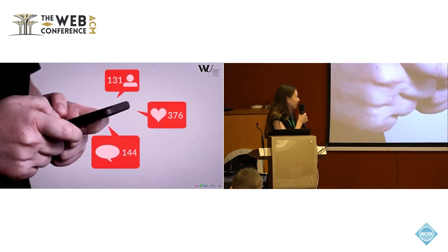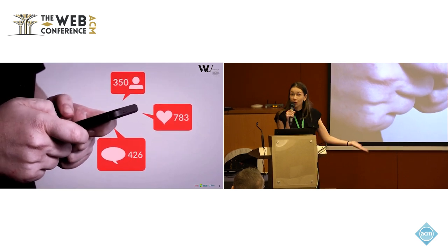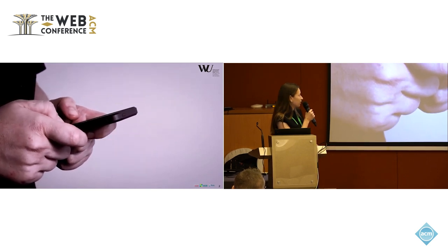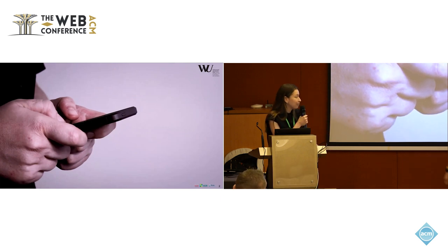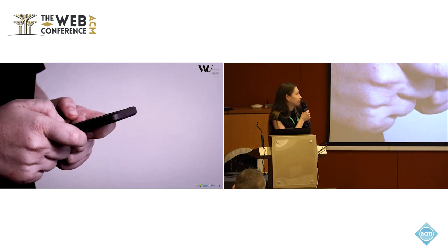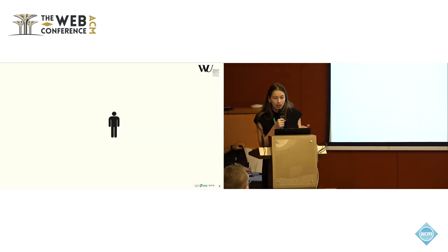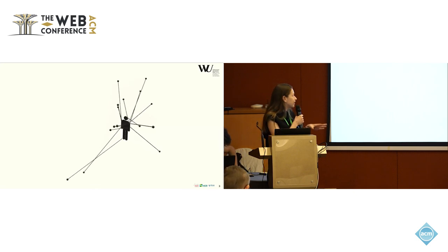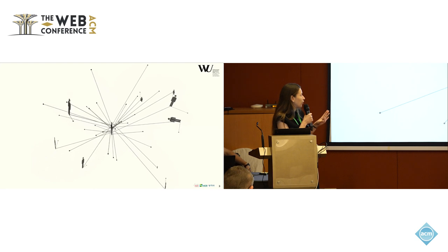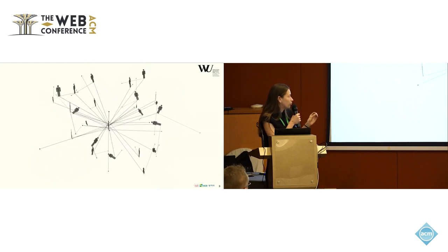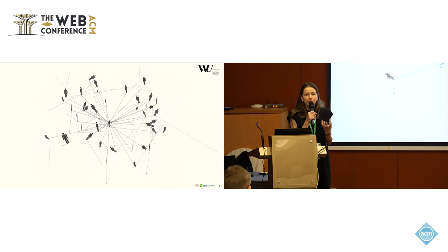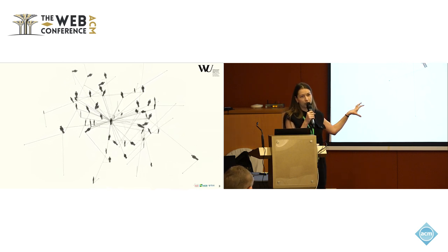Let me start with a question: have you ever wondered how communities form online on social media platforms? In our digital landscape, social media platforms such as Twitter, TikTok, and Instagram have become crucial communication hubs fostering communities worldwide, especially during crisis situations such as war. Yet within this vast expanse of social networks, a complex web of connections emerges, making it difficult to grasp the cohesive structure inside.